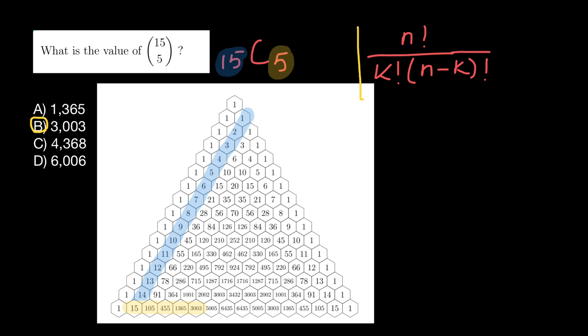Now let's use this formula in order to solve this problem. N choose K means 15 choose five. Let's put numbers.